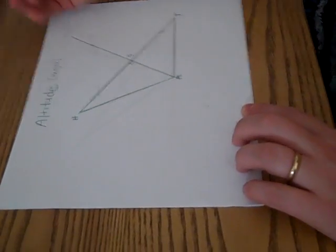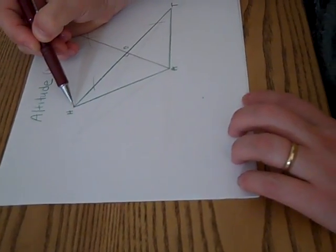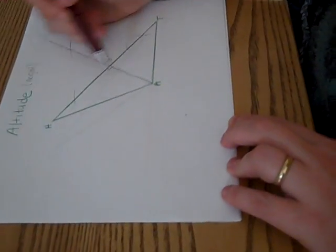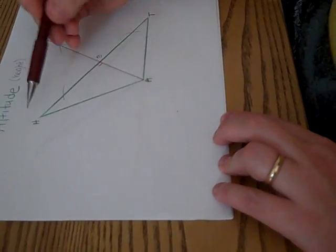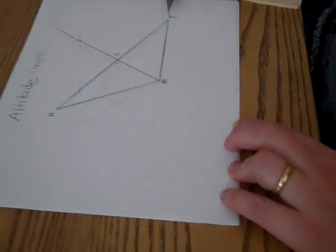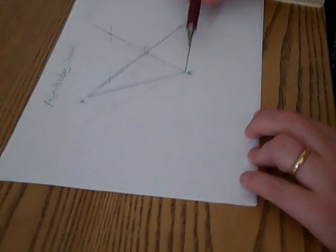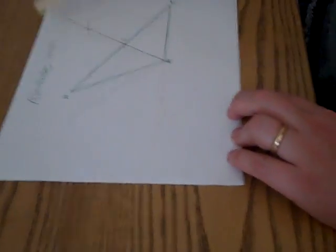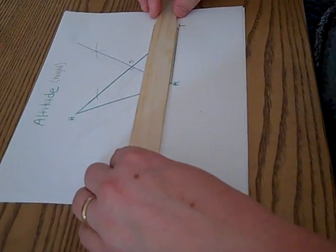If I want to construct the altitude from vertex H, well, I know I can't go 90 degrees in this direction so I'm going to have to extend segment A-T. Let's go ahead and do that with a different color.